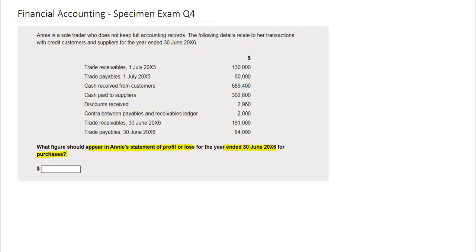If we have a look at the detail presented in this question, you're told that Annie is a sole trader who doesn't keep full accounting records. We've been given the details of transactions relating to both credit customers as well as suppliers, and this is for the year ended 30th of June 20X6. It's important to note that the question is asking us to derive the purchases figure, yet we've been presented with information both for customers and suppliers.